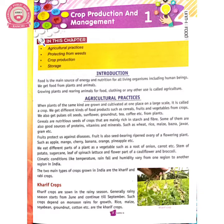In this chapter we discuss agriculture practice, protection from weeds, crop production and storage. We know that food is the main source of energy and nutrition for all living organisms including human beings. We get food from plants and animals. Food is essential — you cannot stay without it, as food helps people to stay alive.